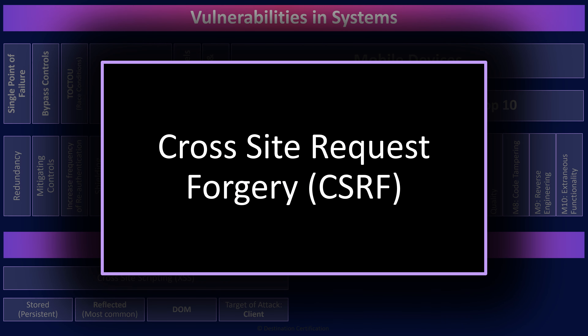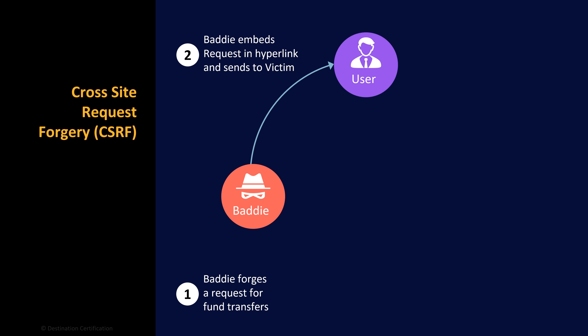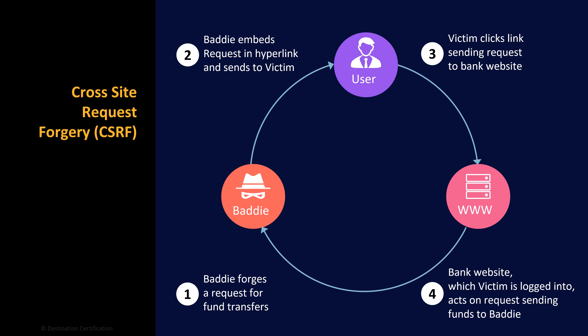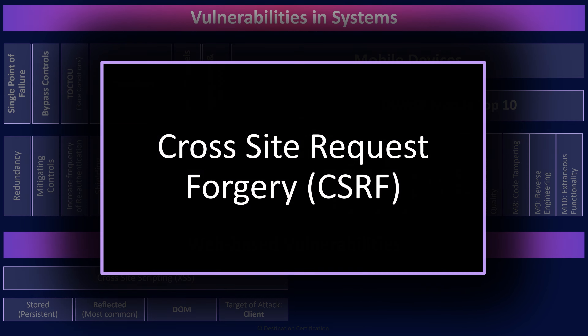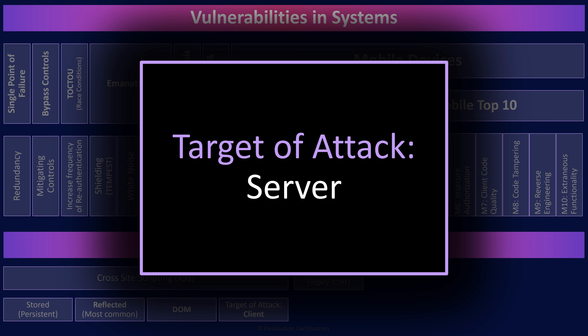The next common web-based vulnerability is cross-site request forgery. This is where an attacker forces or tricks a user into executing unwanted actions on a web application in which the user is currently authenticated, effectively allowing the attacker to execute unauthorized commands on a server. The attack passes through the user and may negatively impact the user, but ultimately the target of attack is the server.